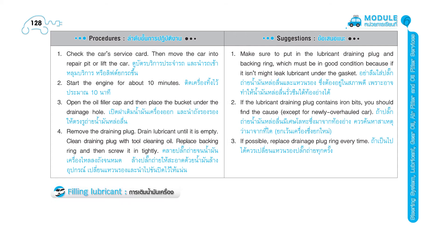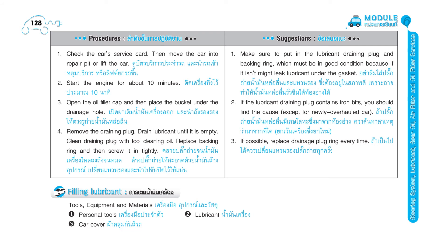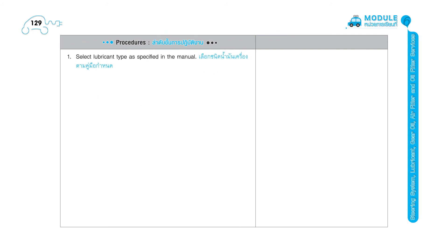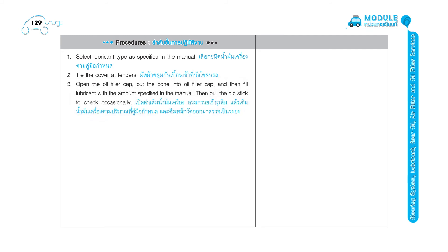Filling lubricant. Tools, equipment and materials: 1. Personal tools. 2. Lubricant. 3. Car cover. 4. Car. 5. Oil filling cone. Procedures: 1. Select lubricant type as specified in the manual. 2. Tie the cover at fenders. 3. Open the oil filler cap, put the cone into oil filler cap, and then fill lubricant with the amount specified in the manual. Then pull the dipstick to check occasionally.